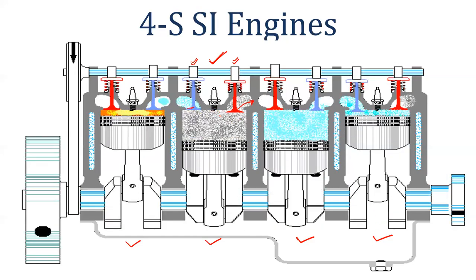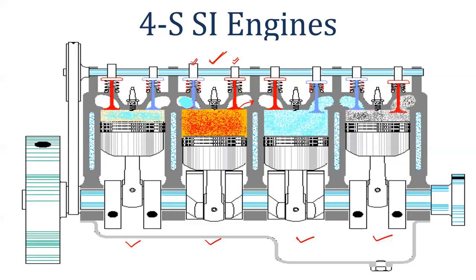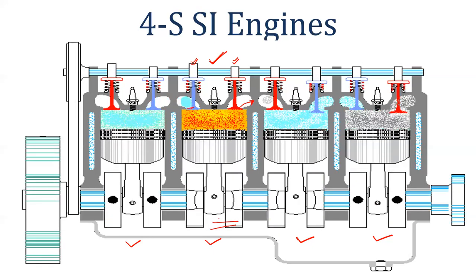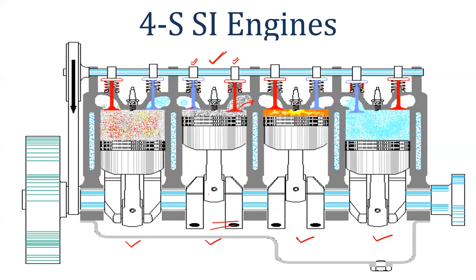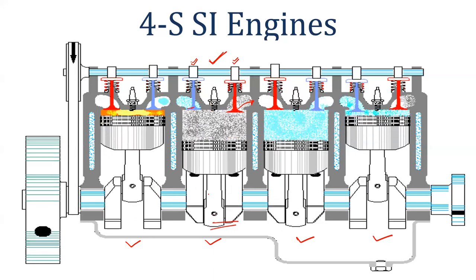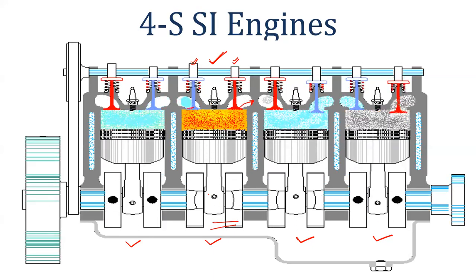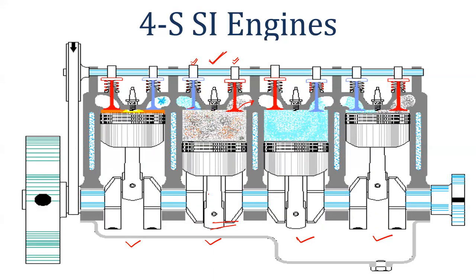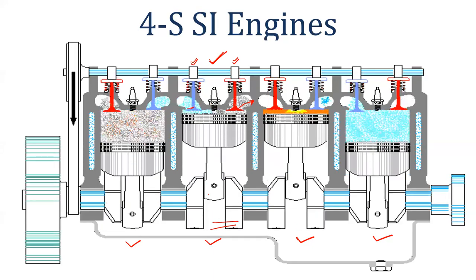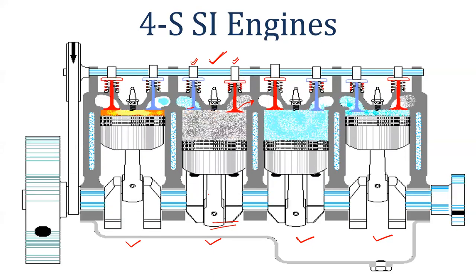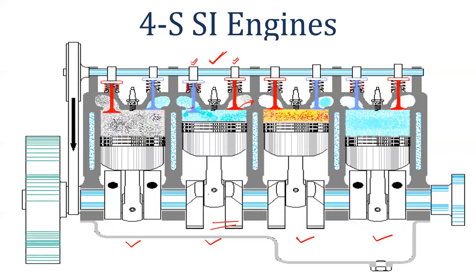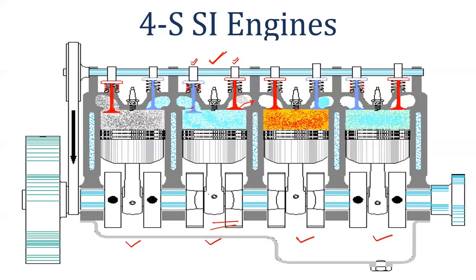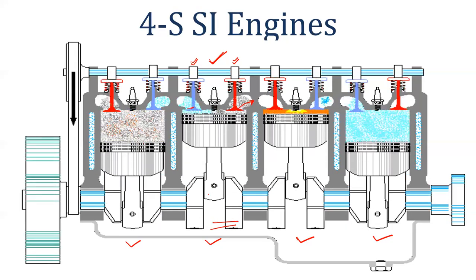In this complete cycle, the piston moves up and down four times. The crankshaft completes two revolutions. When the crankshaft completes two revolutions, the piston completes 4 strokes: intake, compression, power, and exhaust. After compression, the spark plug ignites the fuel, combustion starts, and then the power stroke begins.